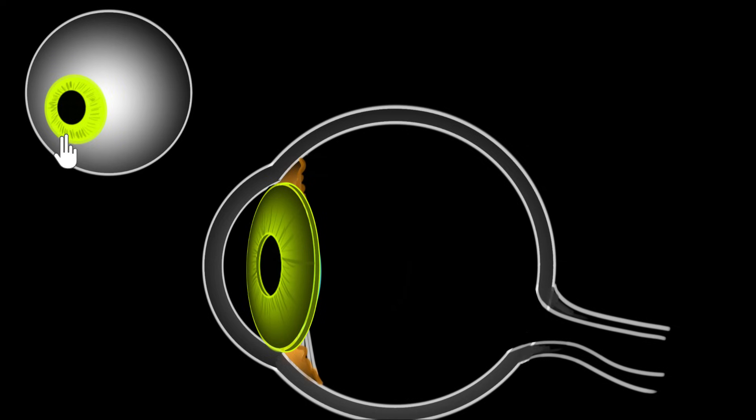So let's start with the one that is most visible to us, this structure. This is called the iris. And when people talk about the color of the eye, they're actually talking about the color of the iris.